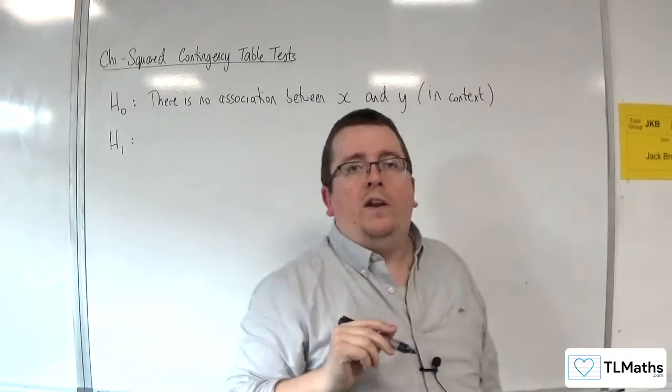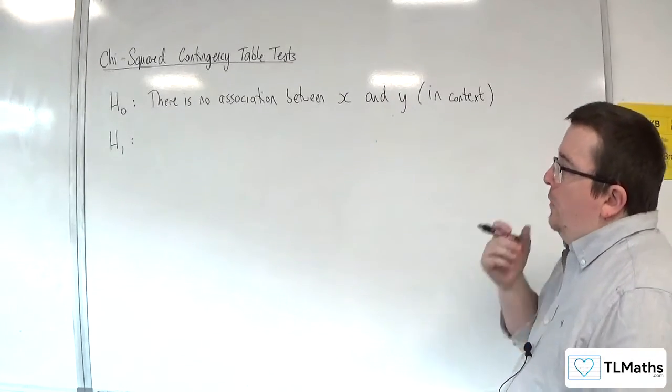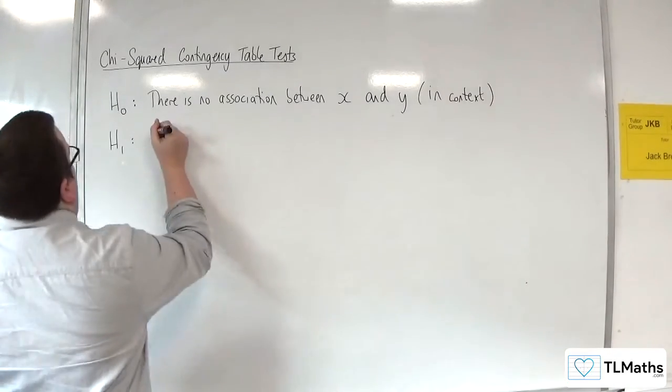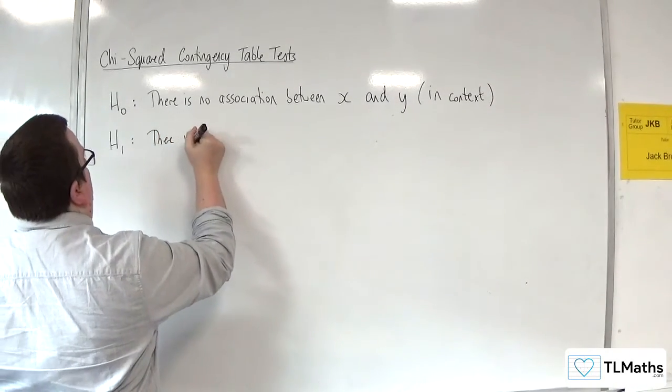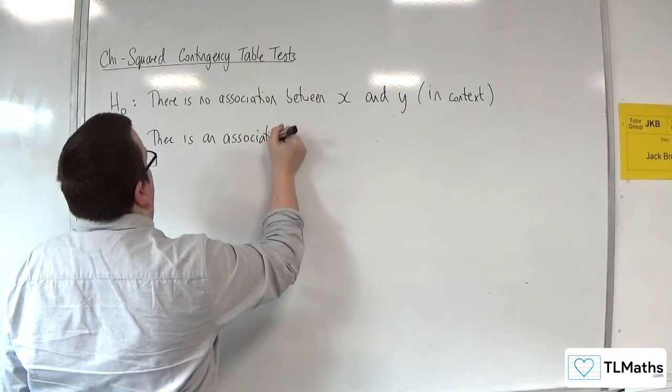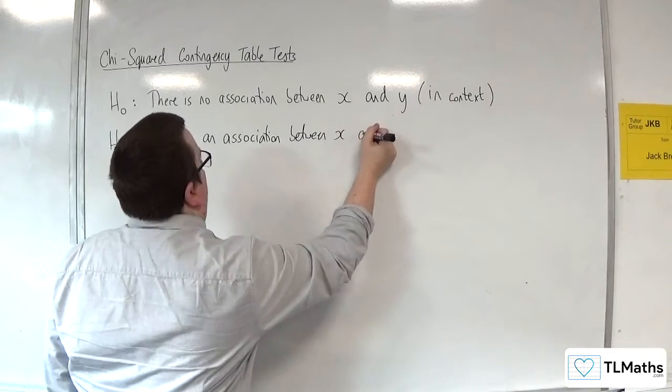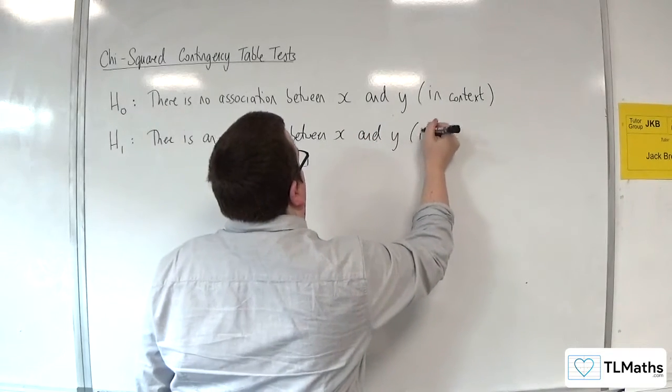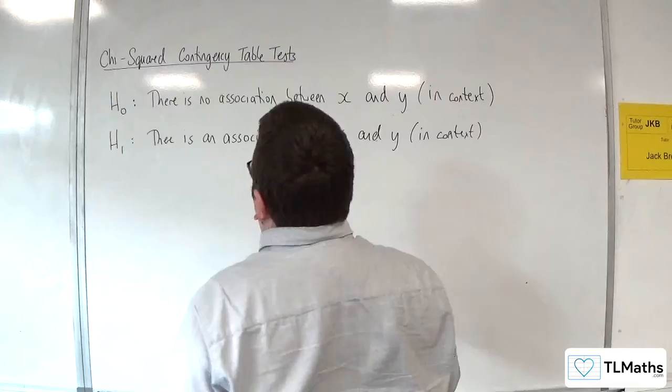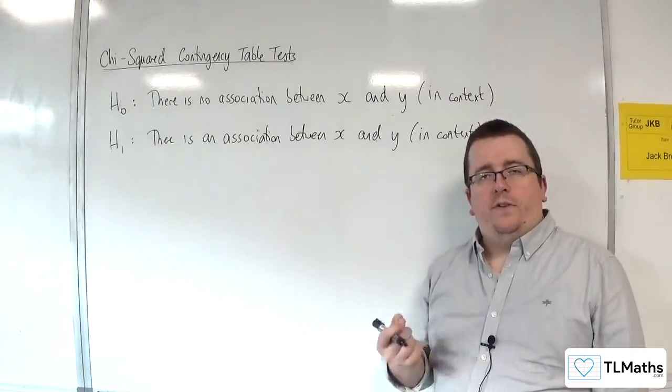The alternative hypothesis that we deal with, there's only actually one of those that we look at on this course. What we consider as the alternative hypothesis is there is an association, or there is some association between x and y in context. We actually only look at one alternative hypothesis.